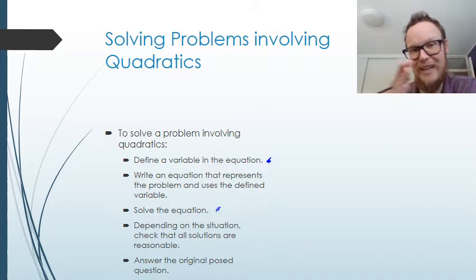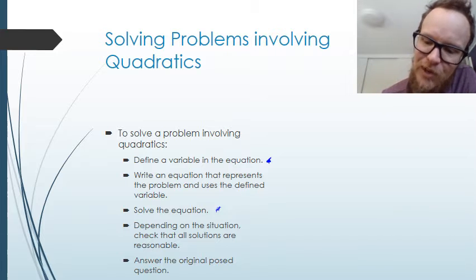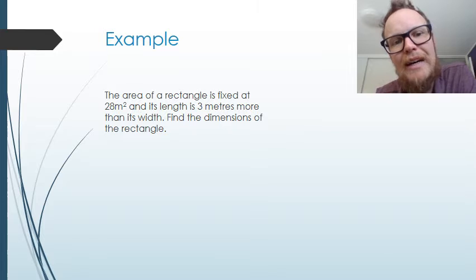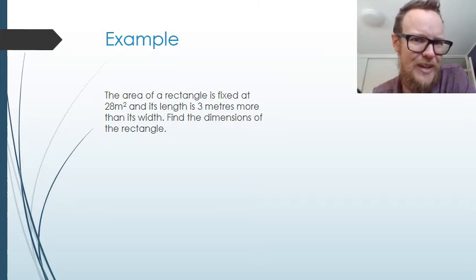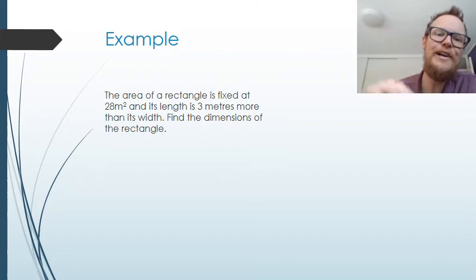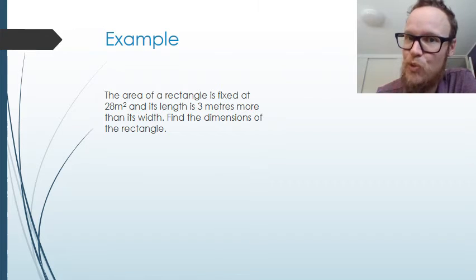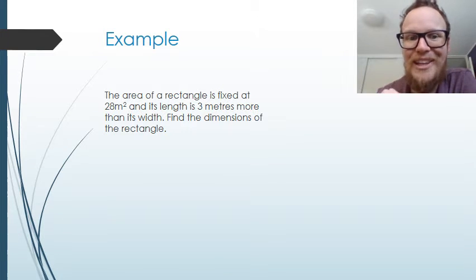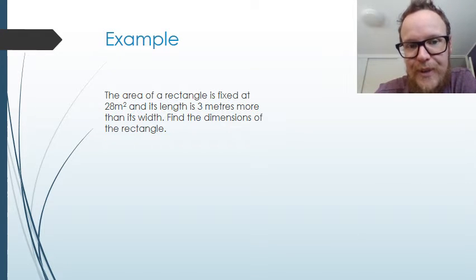Then we need to make sure we answer that original question posed, answer it in a sentence. We've got an example for you here, it's going to be quick, but we're going to do it in a lot of detail. So we've got an area, it's a rectangle, it is exactly 28 square meters, the length is 3 meters more than its width, find the dimensions of the rectangle.